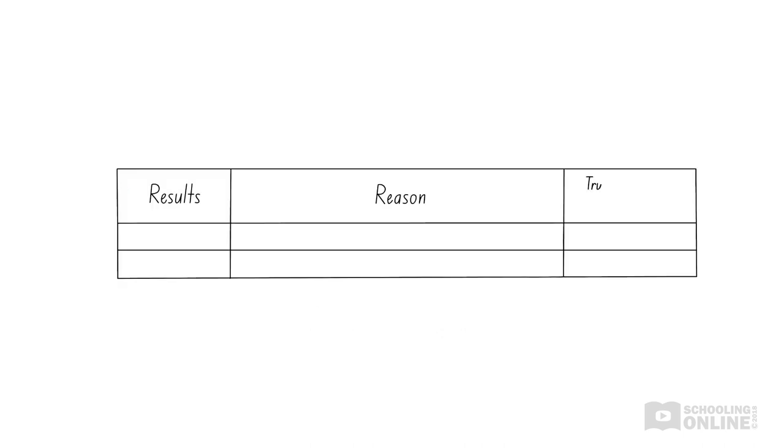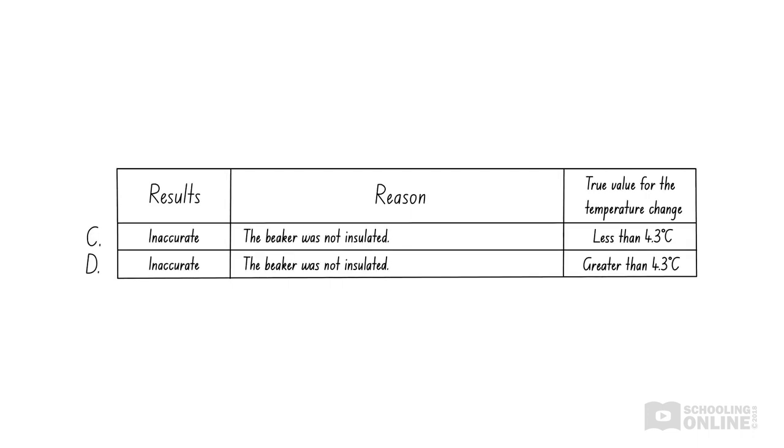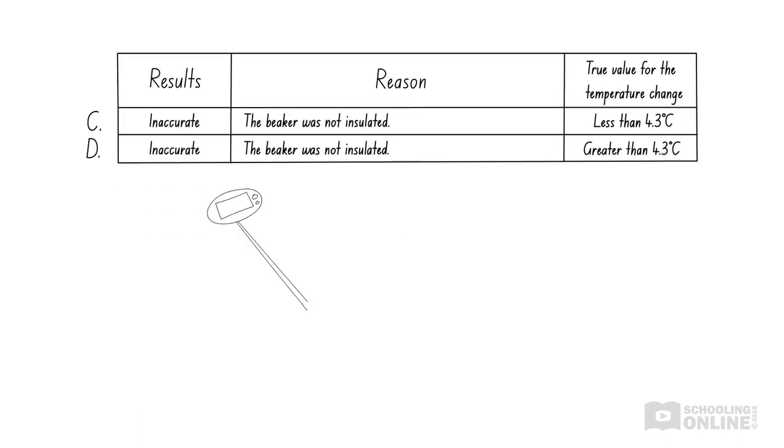Now, options C and D provide the same description of the experiment. It is not accurate as the beaker is not insulated. As we can see from the question, the temperature increases by 4.3 degrees Celsius.